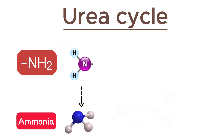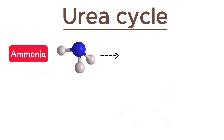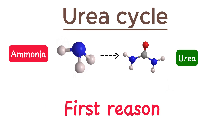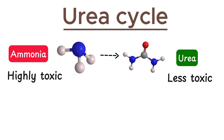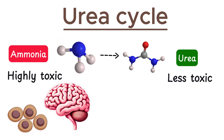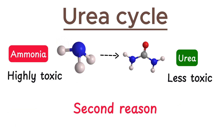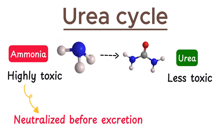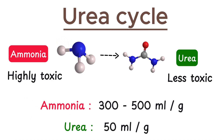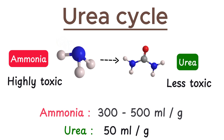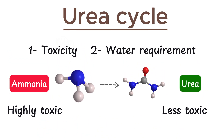Now comes the important part. This ammonia needs to be converted into urea, and there are two main reasons for that. First, ammonia is highly toxic to our body, even in small amounts. If it accumulates, it can damage cells, especially in the brain. The body must quickly and efficiently get rid of ammonia. But there's a catch — ammonia is so toxic that it must be neutralized before excretion. Directly excreting ammonia would require a large amount of water, something our bodies can't afford to lose. So to solve both of these problems, our body converts ammonia into a less toxic and more water-soluble compound — urea — which can be safely excreted through urine.